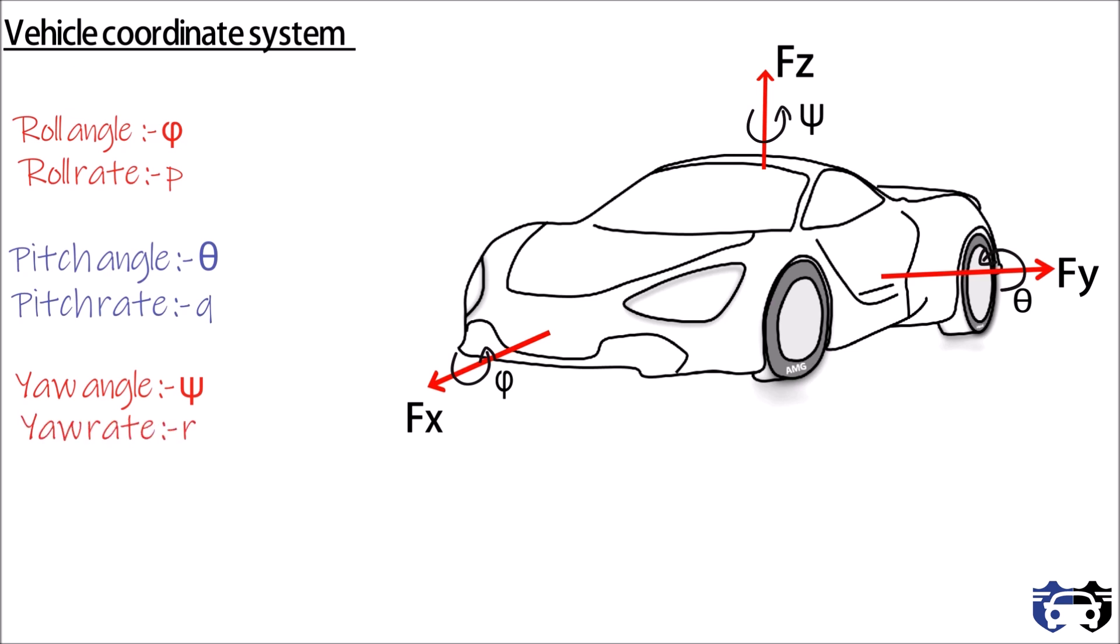We all know angular velocity is given by differentiation of angular displacement with respect to theta, that is omega equals dθ/dt. So we get p equals φ̇, q equals θ̇, and r equals ψ̇.